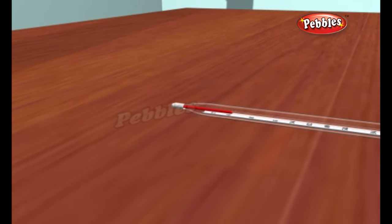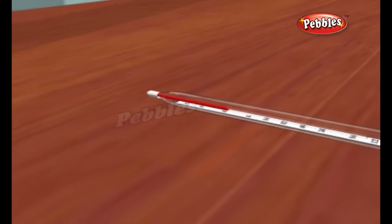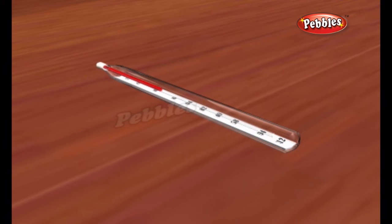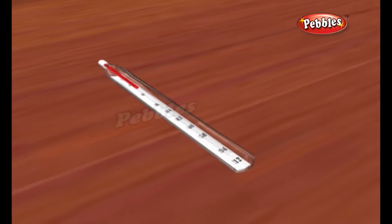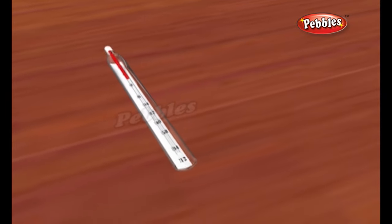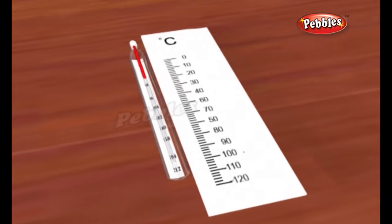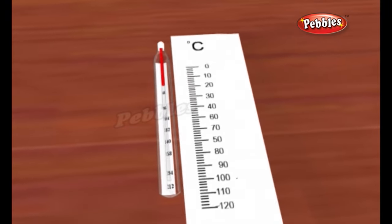When mercury gets hotter, it expands by an amount that's directly related to the temperature. So, if the temperature increases by 20 degrees, the mercury expands and moves up the scale by twice as much as if the temperature increase is only 10 degrees. All we have to do is mark a scale on the glass and we can easily figure out the temperature.